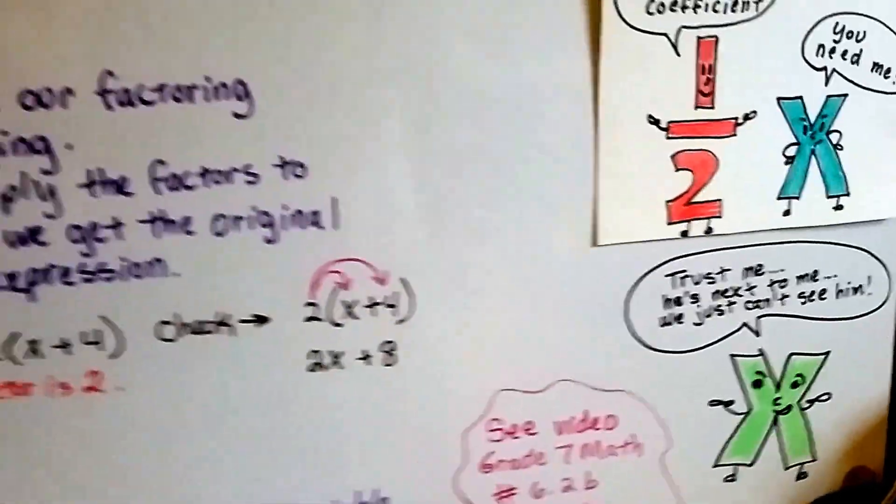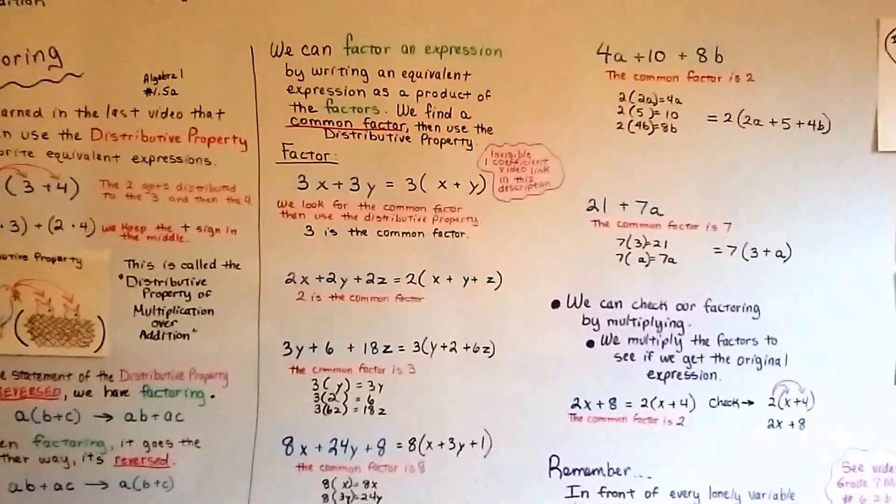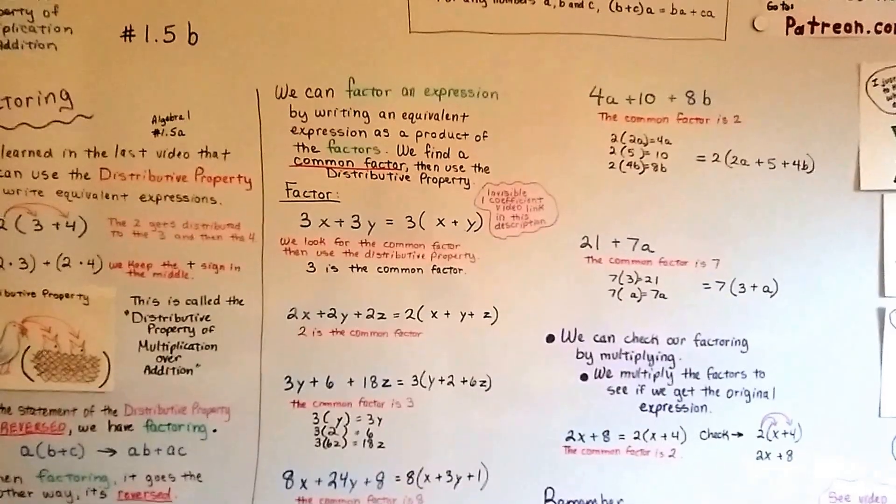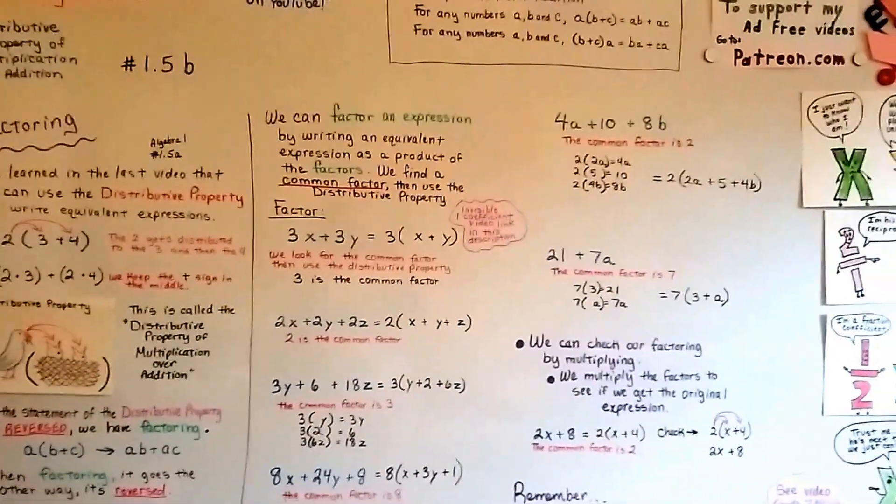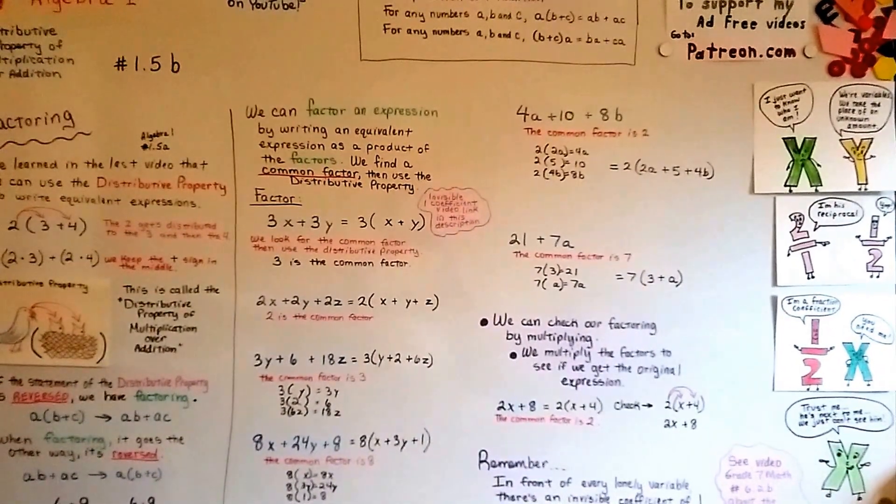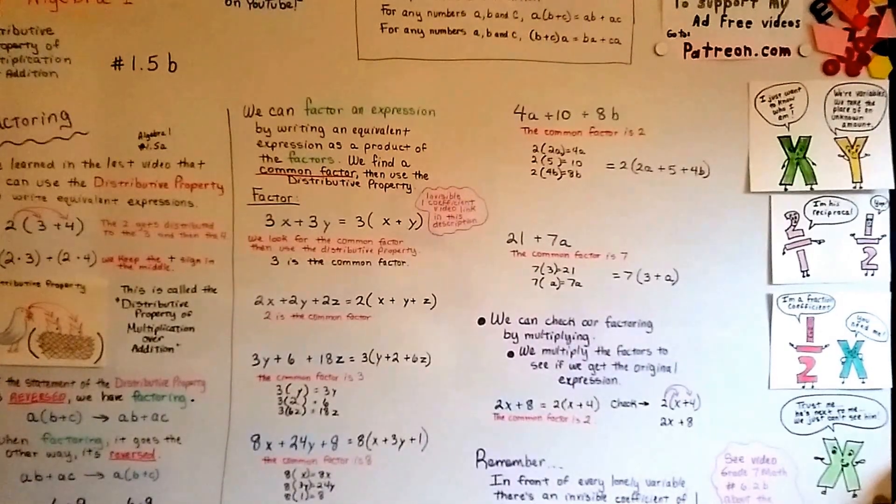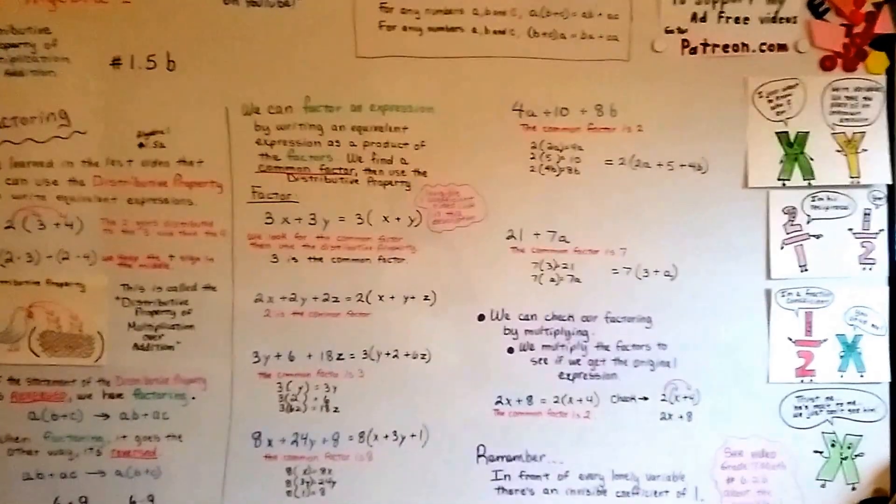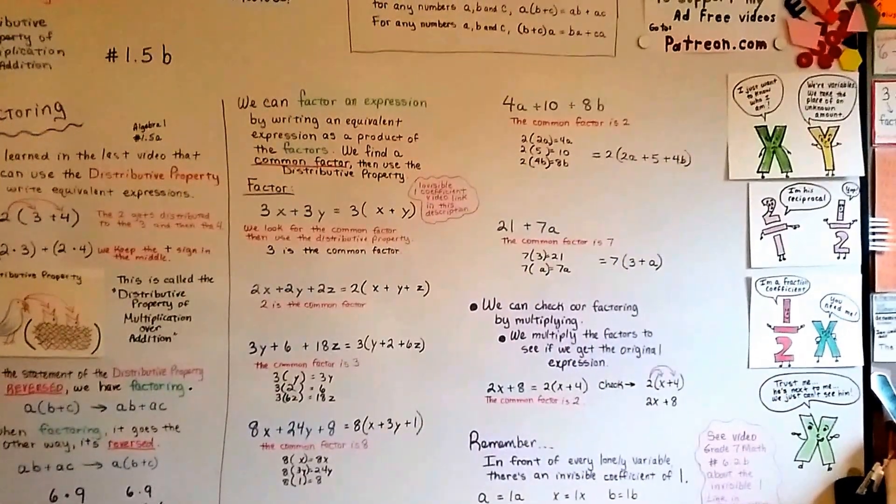Alright. We're going to move on to our next video. And we're going to talk about combining or collecting like terms in an expression. I'm going to talk about when there are terms in an expression that are alike, how we're going to put them together. We're going to collect them and combine them. It's going to be in 1.5c. I hope I'll see you there. I hope you're doing well. Keep trying. We're going to make it. Bye.